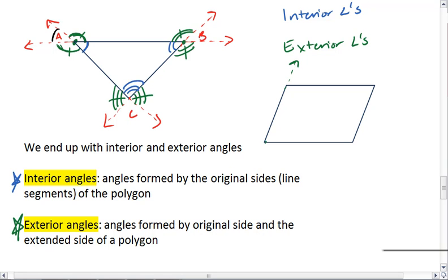You can extend the sides of this quadrilateral. Our blue arcs are the interior angles and the red arcs are the exterior angles. So we have 4 interior angles and 8 exterior angles. You'll probably notice a pattern that with polygons, for each interior angle we have 2 exterior angles.